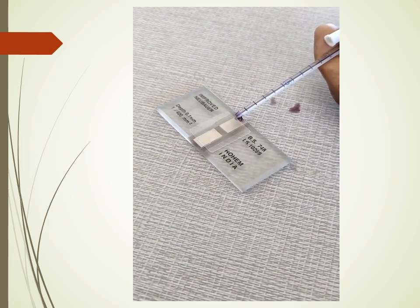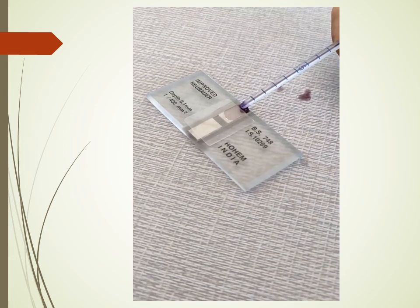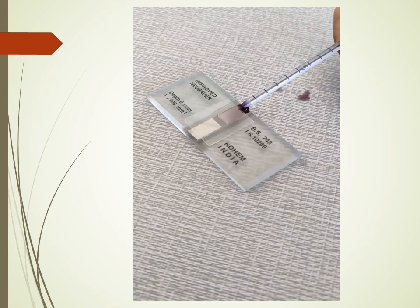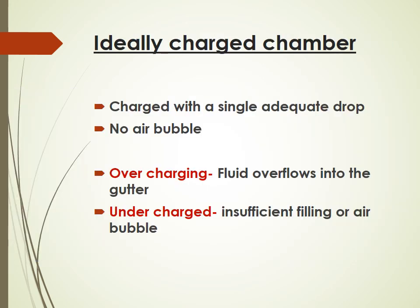Place a clean cover slip on the chamber, then charge the chamber by putting a drop of fluid just near the cover slip — the drop spreads under the cover slip by capillary action. Avoid air bubbles and fluid overflow. An ideally charged chamber has a single drop with no air bubbles; overcharging causes fluid overflow into the gutter, and undercharging results in insufficient filling or air bubbles.